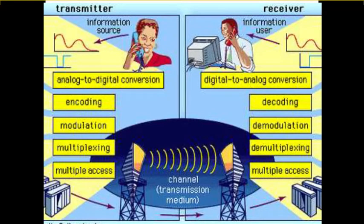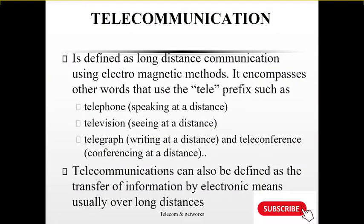Telecommunication, also known as telecom, can be defined as the exchange of information over significant distances by electronic means. A complete telecommunication circuit consists of two stations: the sender and the receiver. Each station is equipped with a transmitter and a receiver respectively. Telecommunication is essentially long-distance communication using electromagnetic methods, and it encompasses other words that use 'tele' as a prefix.